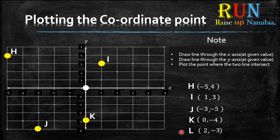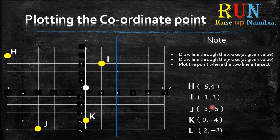The last one is L. The x value is positive 2 — find positive 2 on the x-axis and draw a line through it. The y value is negative 3 — go to the y-axis, find negative 3, and draw another line. Where the two lines intersect or cross — that's where you plot your L.